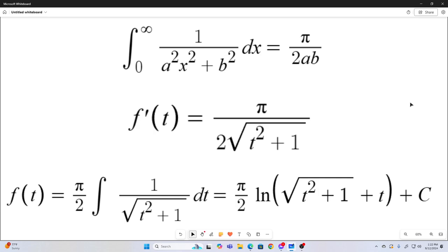And that is going to evaluate to pi over 2 natural log square root of t squared plus 1 plus t. And then, of course, we have our constant of integration.